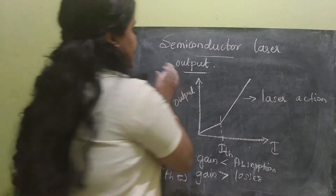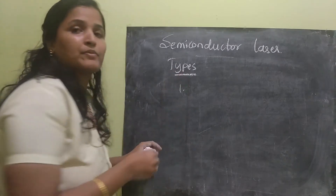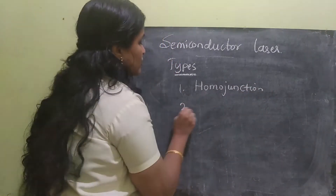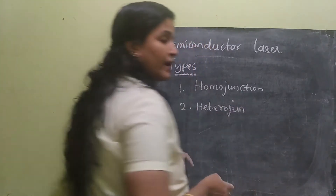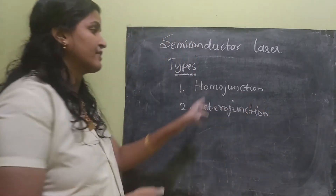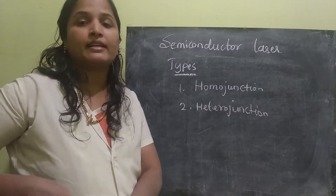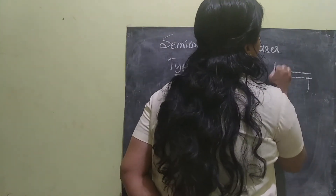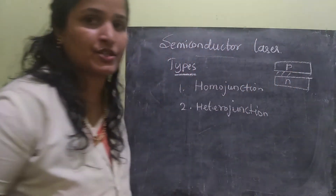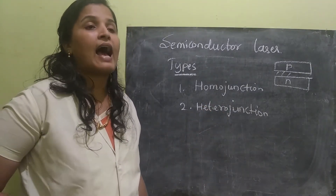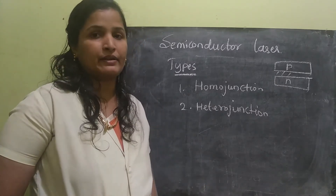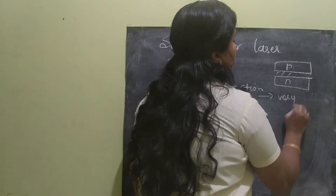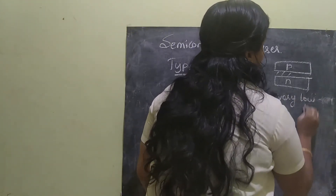Now let's see the types of semiconductor lasers. There are two types of semiconductor lasers. One is homo junction laser and the second one is hetero junction laser. In the name itself — homo junction means the semiconductor laser will have only one junction. That means it will have one N-type material and one P-type material, only one junction. But the drawback of this homo junction is, as the temperature increases, the heat dissipation will be increased. Because of that, this type of laser will be used under very low temperatures.